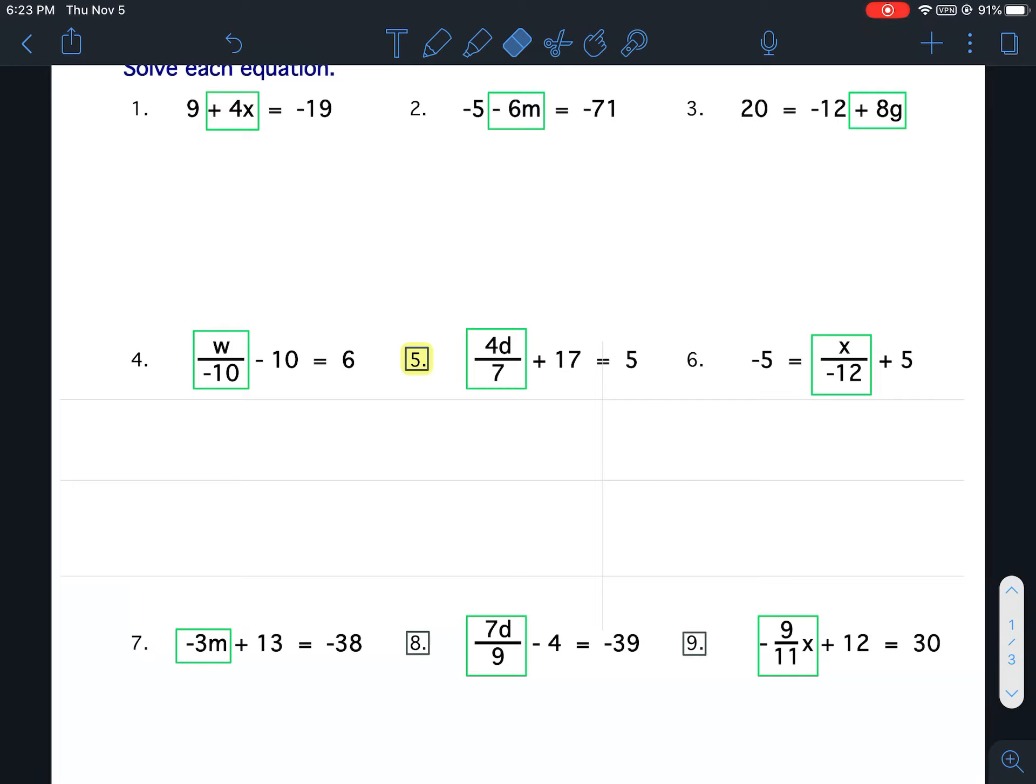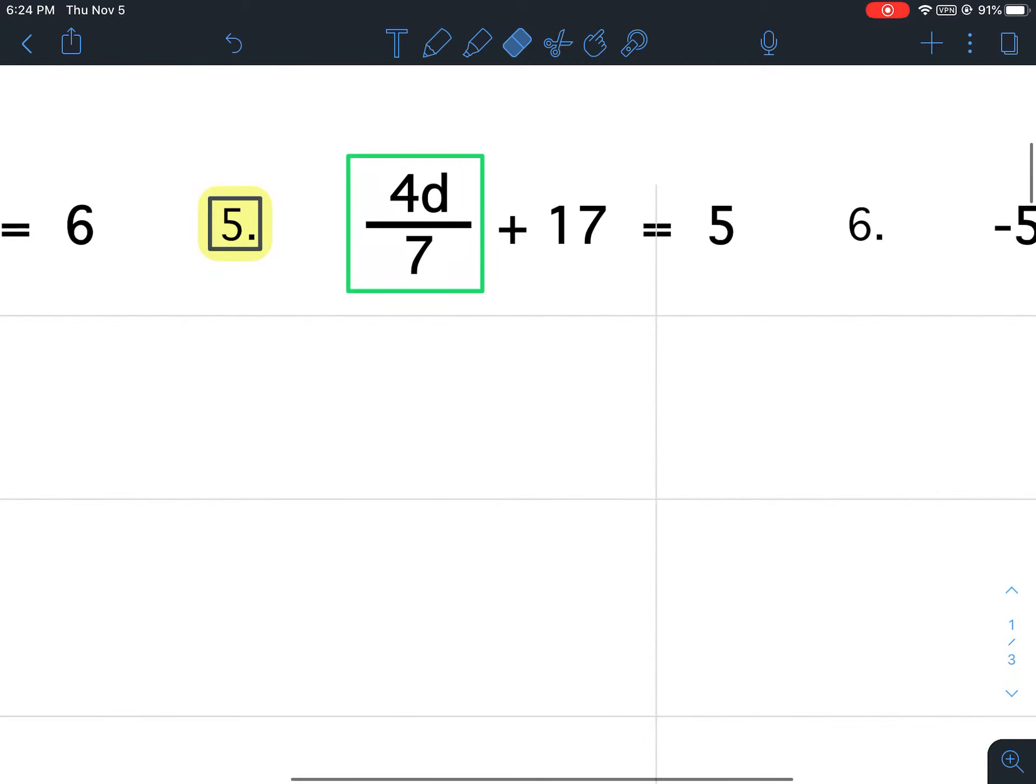Okay, I'm going to do number five with you. So for number five, I've boxed my variable term, and the first thing I want to do is get rid of the number that's outside of the box. Remember, the ultimate goal is to isolate the variable, so I'm trying to get this d by itself. So, I boxed my variable term, that means I don't touch it. Remember, it's like an electric fence, don't touch it. The first step is to get rid of this number outside of the box. Since it's a positive 17, I'm going to subtract 17 from both sides.